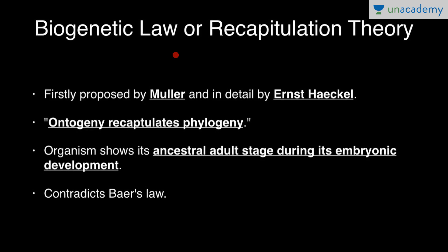The second law is the biogenetic law or recapitulation theory. It was first proposed by Muller and named recapitulation theory, then studied in detail by Ernst Haeckel who named it the biogenetic law. It states that ontogeny recapitulates phylogeny — meaning embryonic development repeats evolutionary history, so the embryo resembles ancestral adult stages. This contradicts Von Baer's law, which states that no embryonic stage completely resembles any ancestral adult stage.